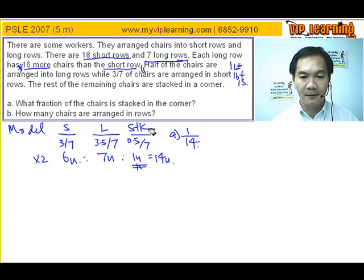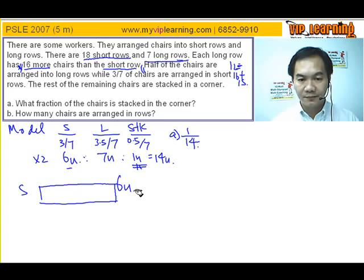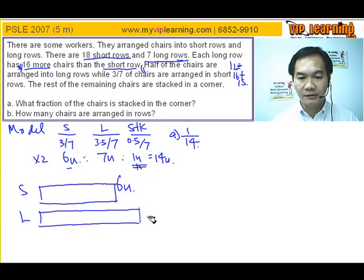For part B it's more complicated. We're going to use all the clues given. We have this short row here. Let's model the whole situation clearly. For short row we have 6 units. For the long row we have a bit more, 7 units.